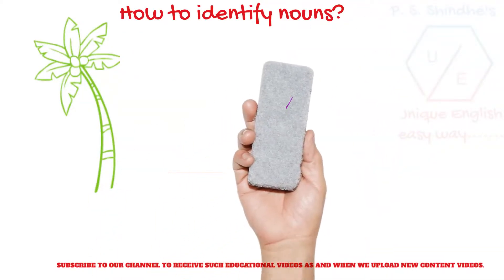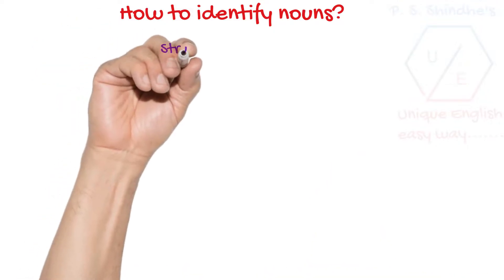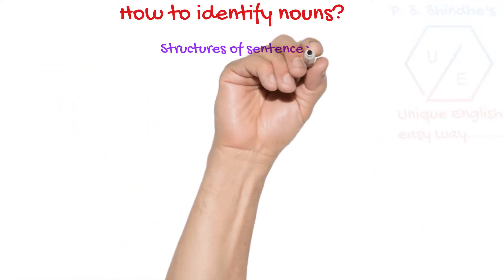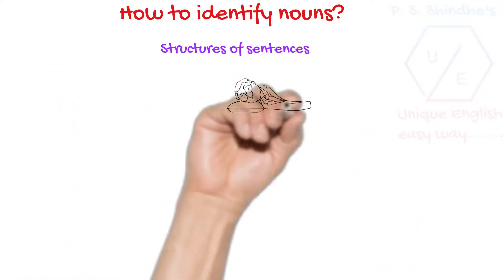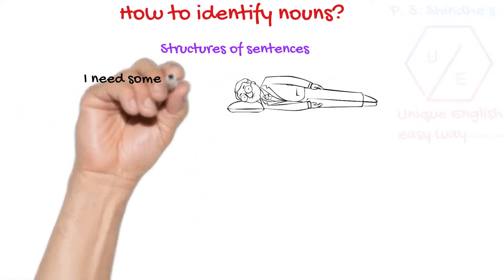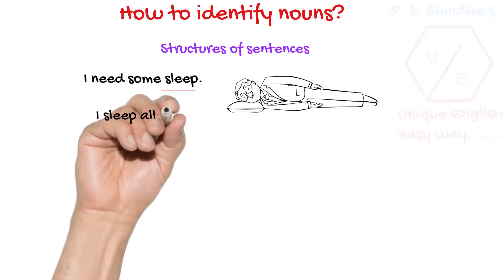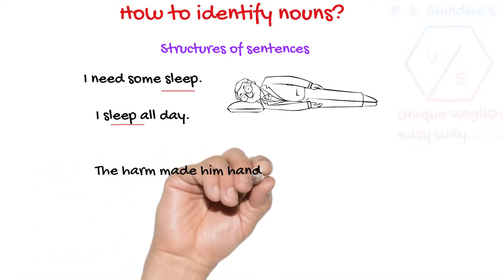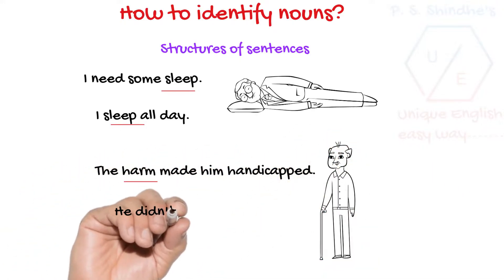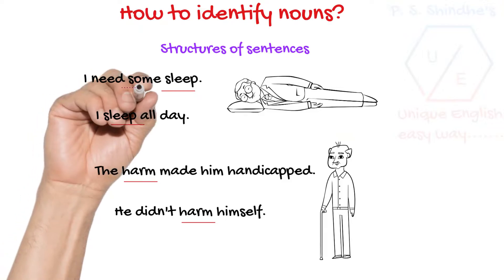Often, we have seen that sentence structures provide clues to identify nouns. In the first sentence, sleep is functioning as a noun. Besides, it has a determiner. Determiners come before nouns and adjectives only.